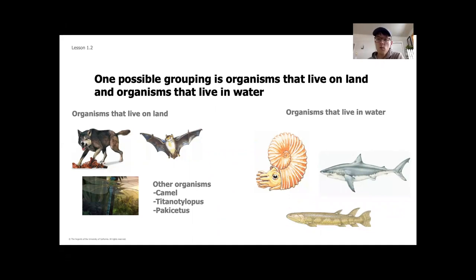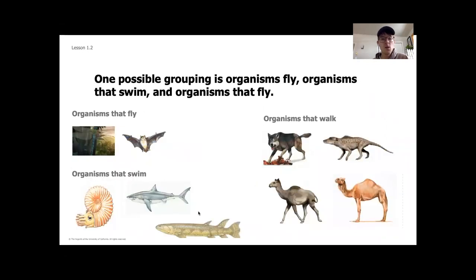So those were nine different species that you may have sorted in a few different ways. I'll give you a couple of ideas. You could have sorted them based on different features — for example, into two categories based on where they live: organisms that live in water, and organisms that live on land. Another way you could have sorted them is based on how they move — organisms that fly, organisms that swim, and organisms that walk. You might also note that some walk on four legs, since we know some animals, like humans, walk on two.